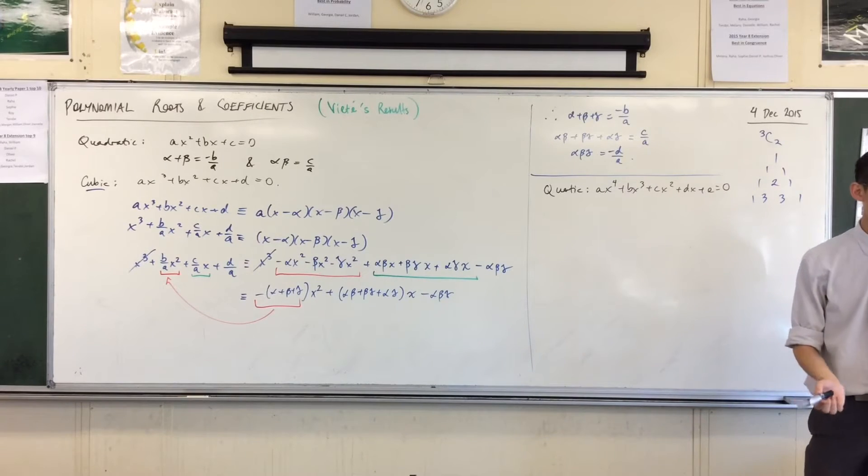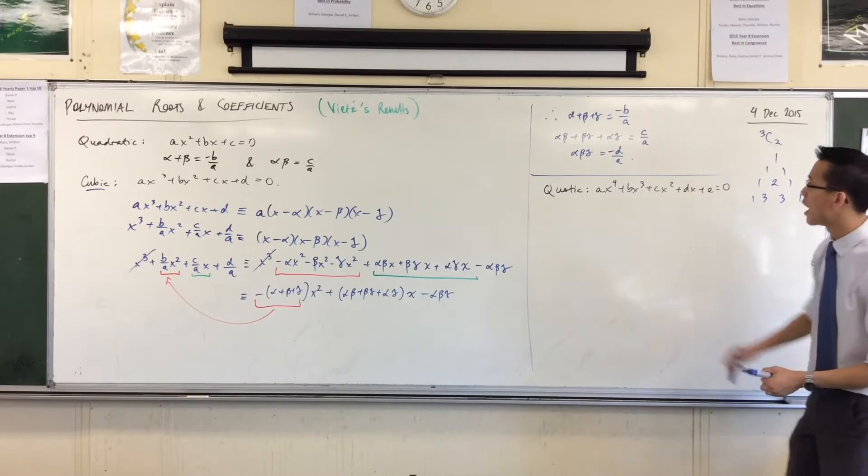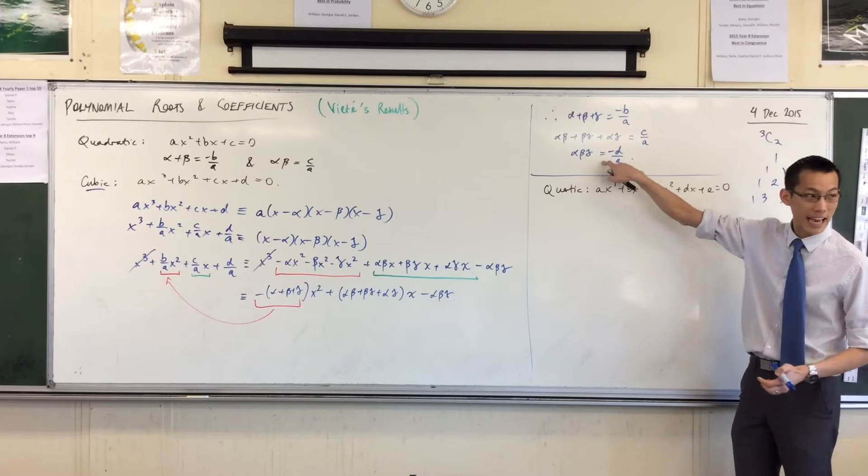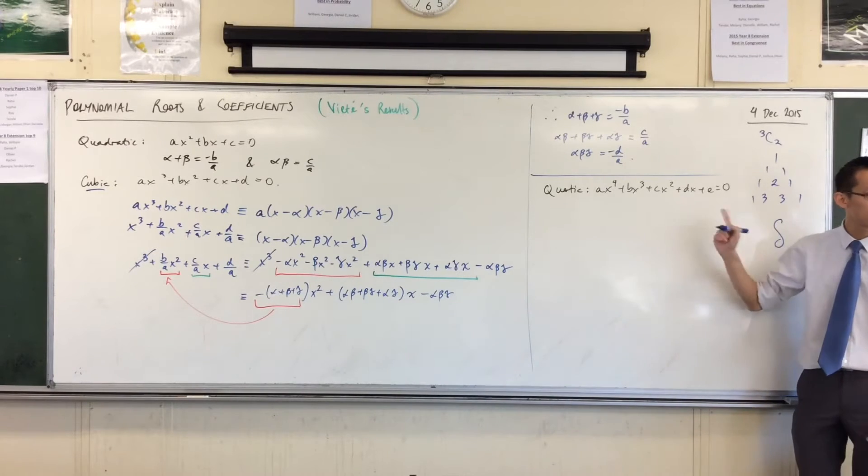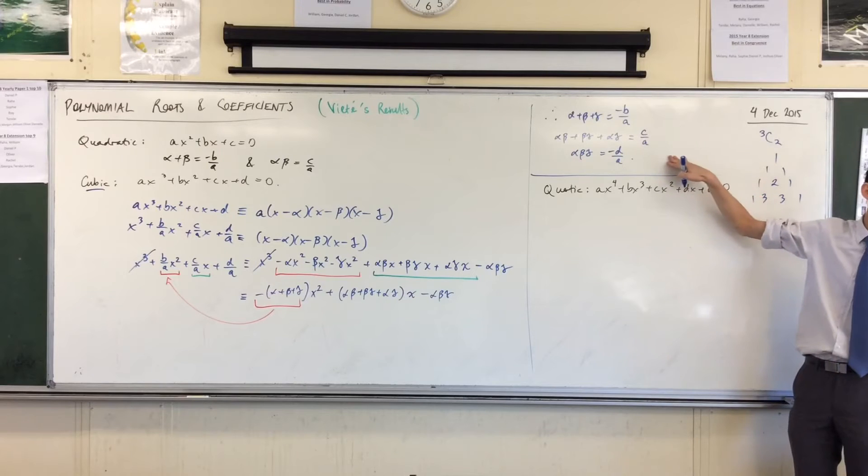It should have how many roots? 4, right? So I used alpha, beta, and gamma before. Now I'm going to add back in delta. Sorry, 4. I mean, I was counting 4, and I said 5. Anyway, so I've got 4 roots. So what are my relationships going to be?